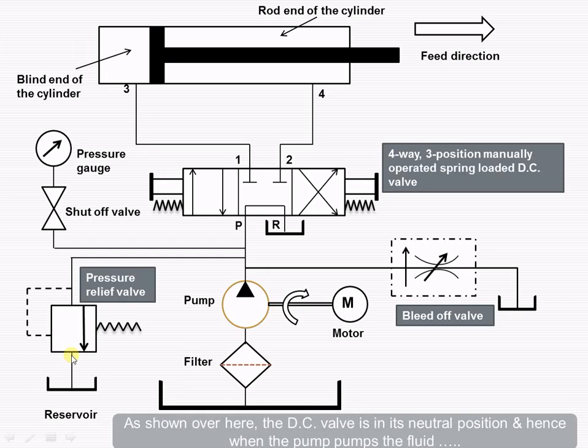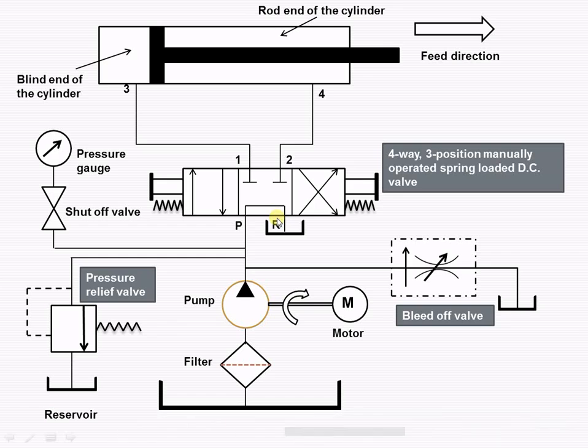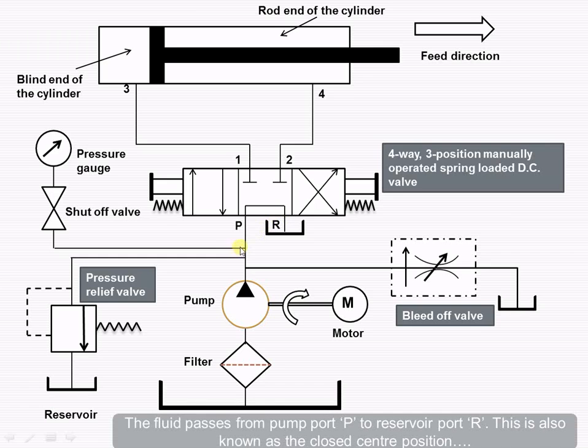As shown over here, the direction control valve is in its neutral position, and hence when the pump pumps the fluid, the fluid passes from pump port P to reservoir port R. This is also known as the closed center position.